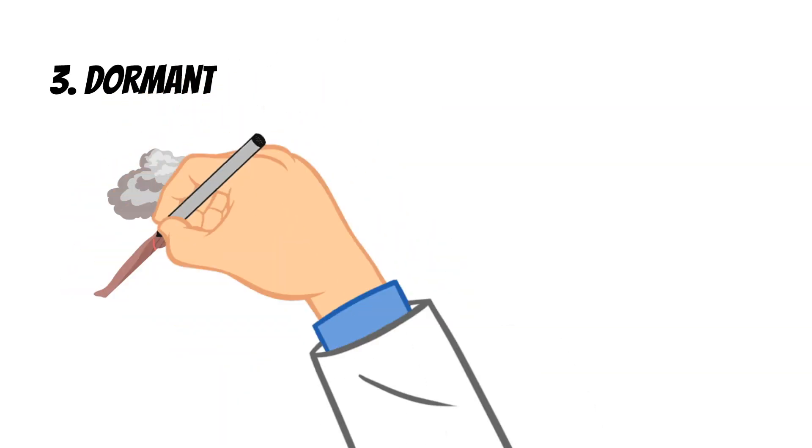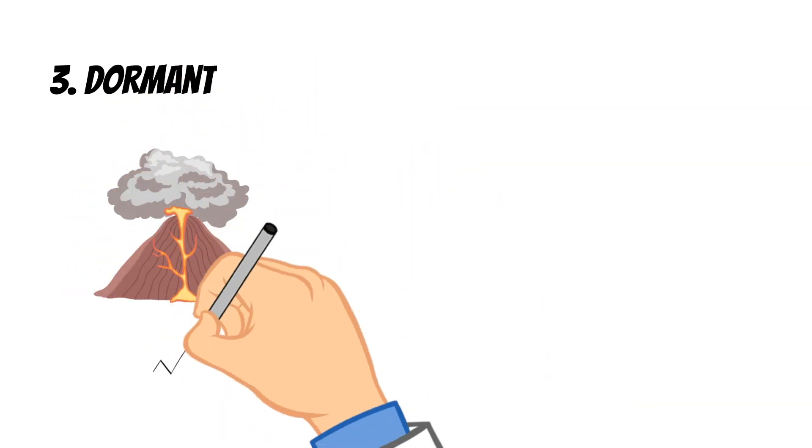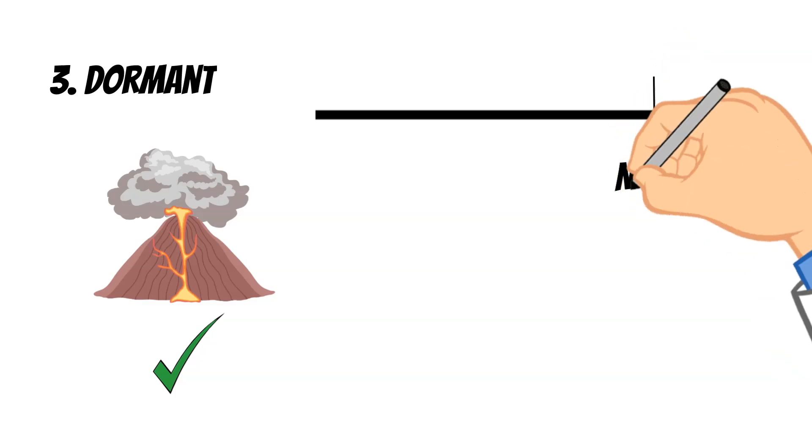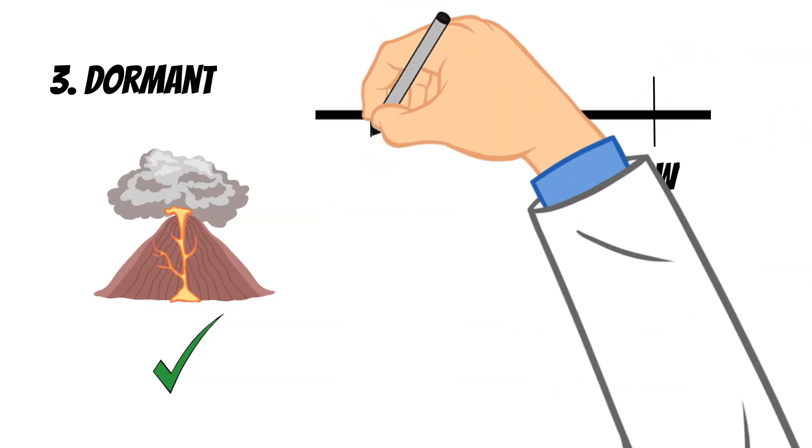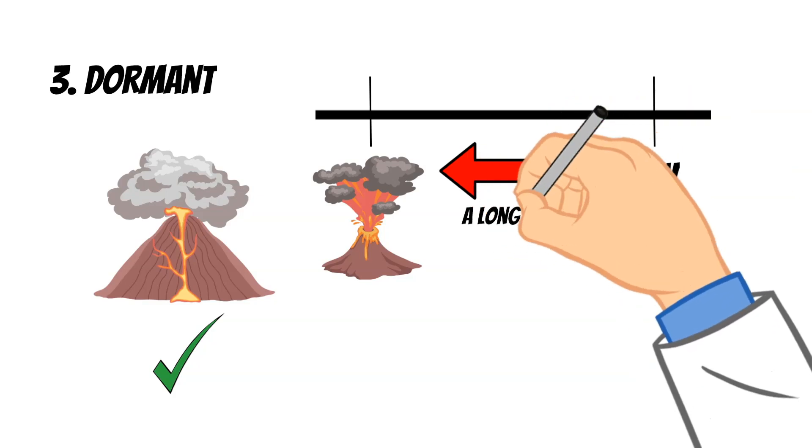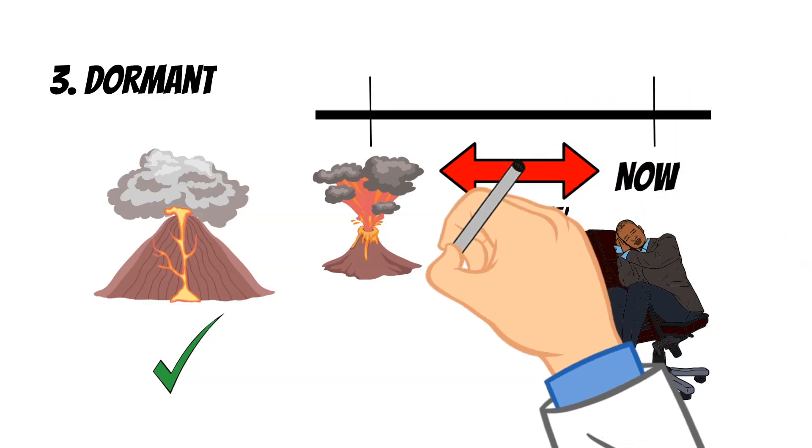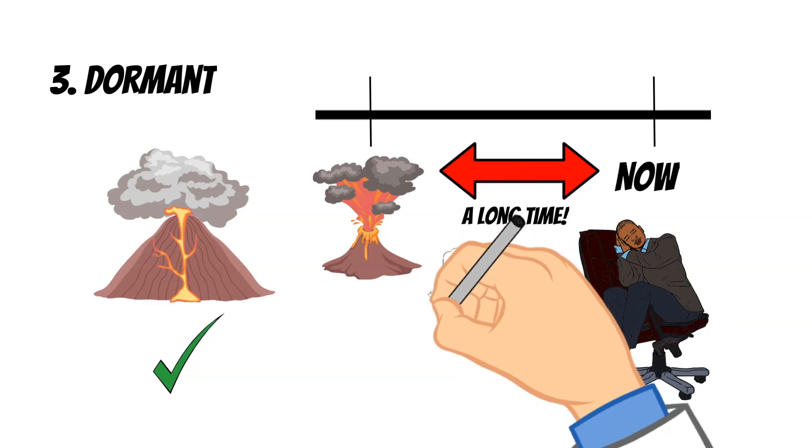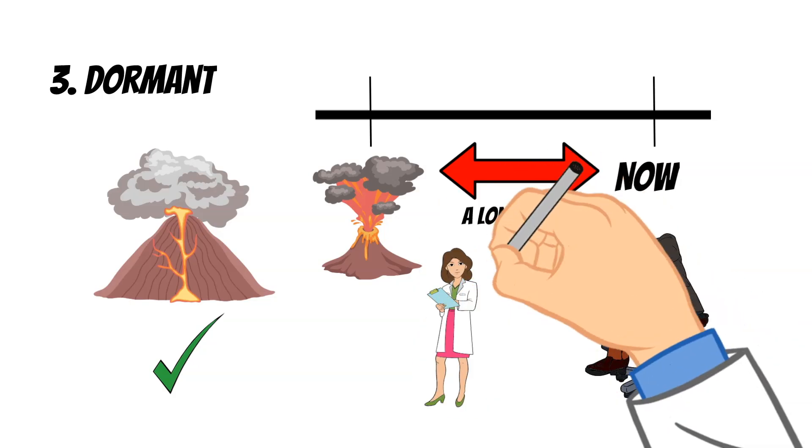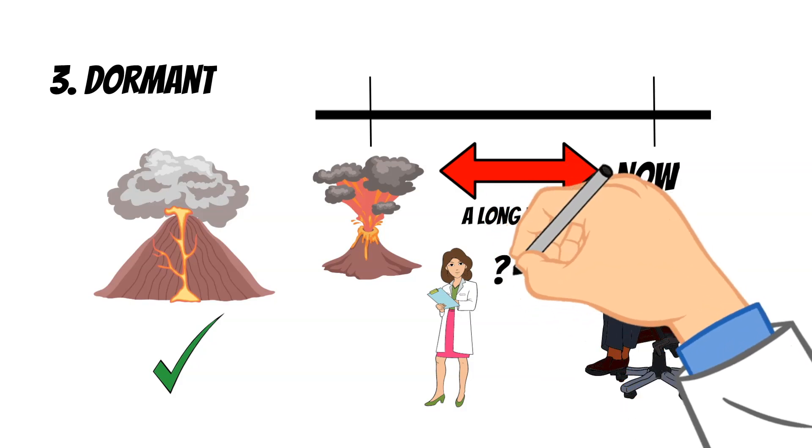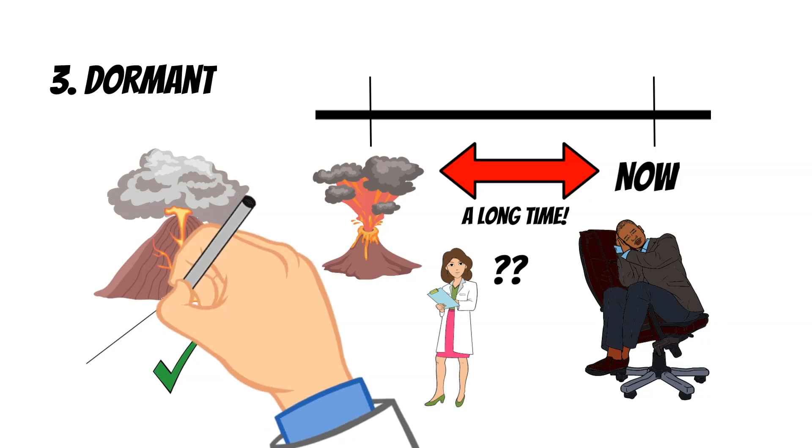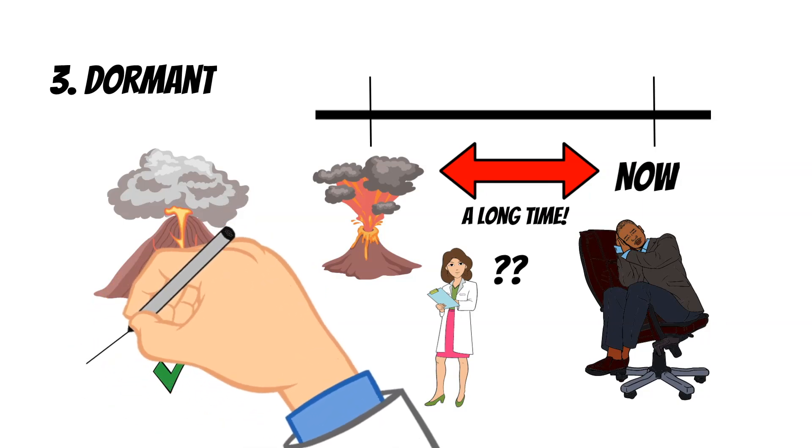Now let's talk about dormant volcanoes. These are also technically active volcanoes which means that they could erupt at any time but they have not erupted for a long period of time. And so many scientists say that dormant volcanoes are sleeping but could awaken any time in the future. It's really difficult for scientists to distinguish between an active volcano and a dormant volcano and the reason for this is because dormant volcanoes still have that reservoir of magma underneath their surface. And so scientists know that they're going to erupt, they just cannot determine when exactly that will happen.